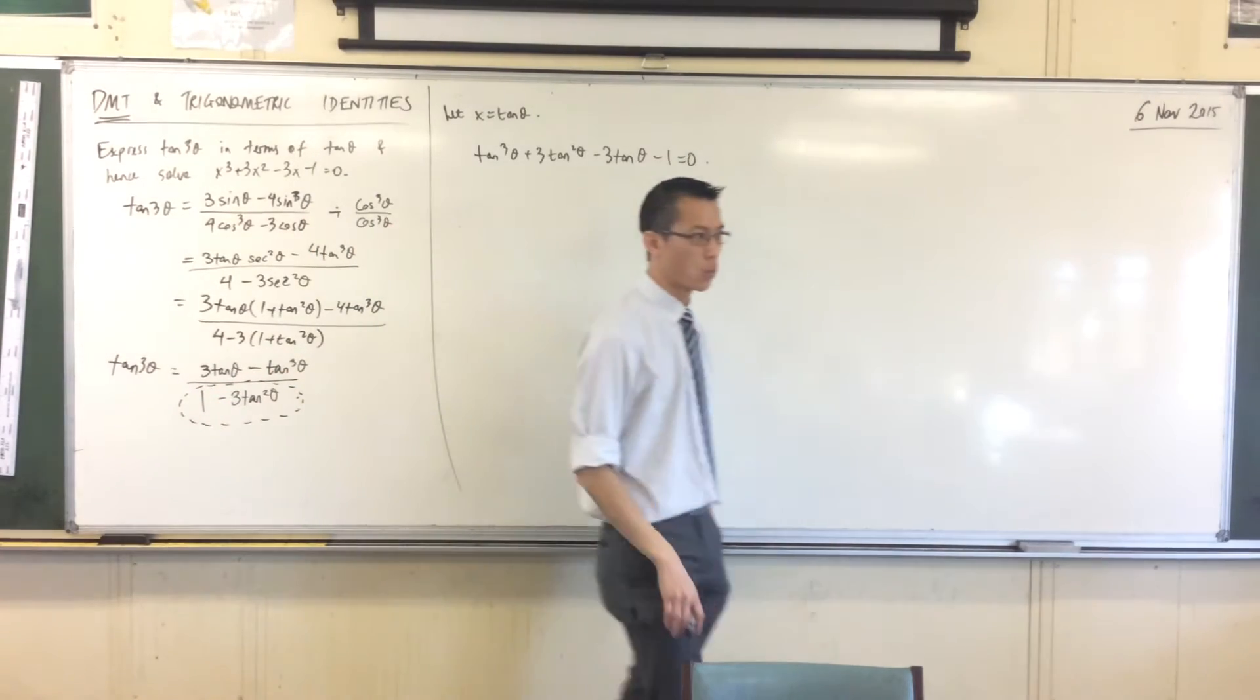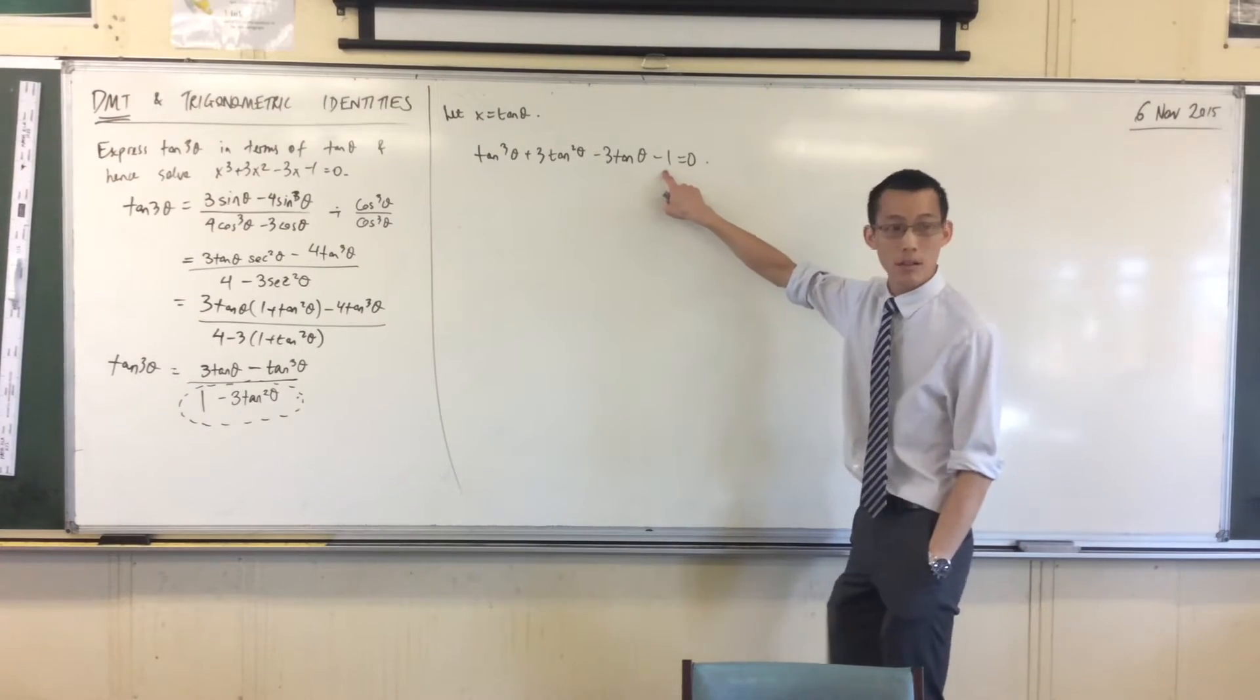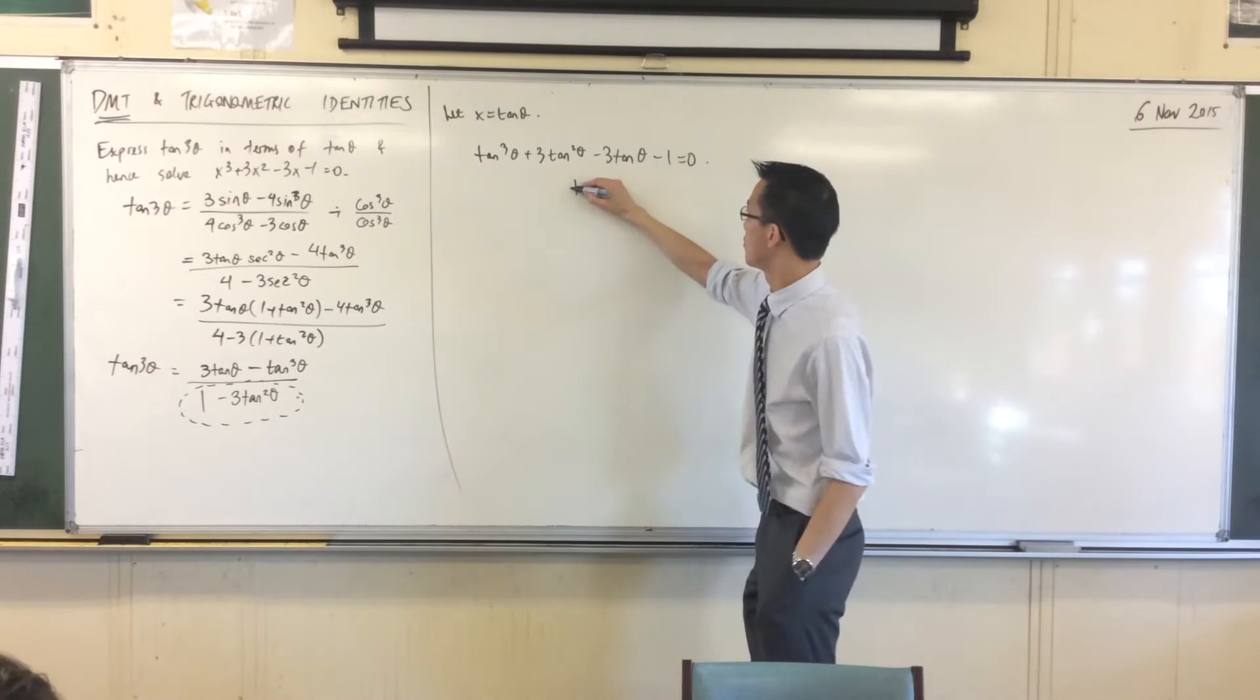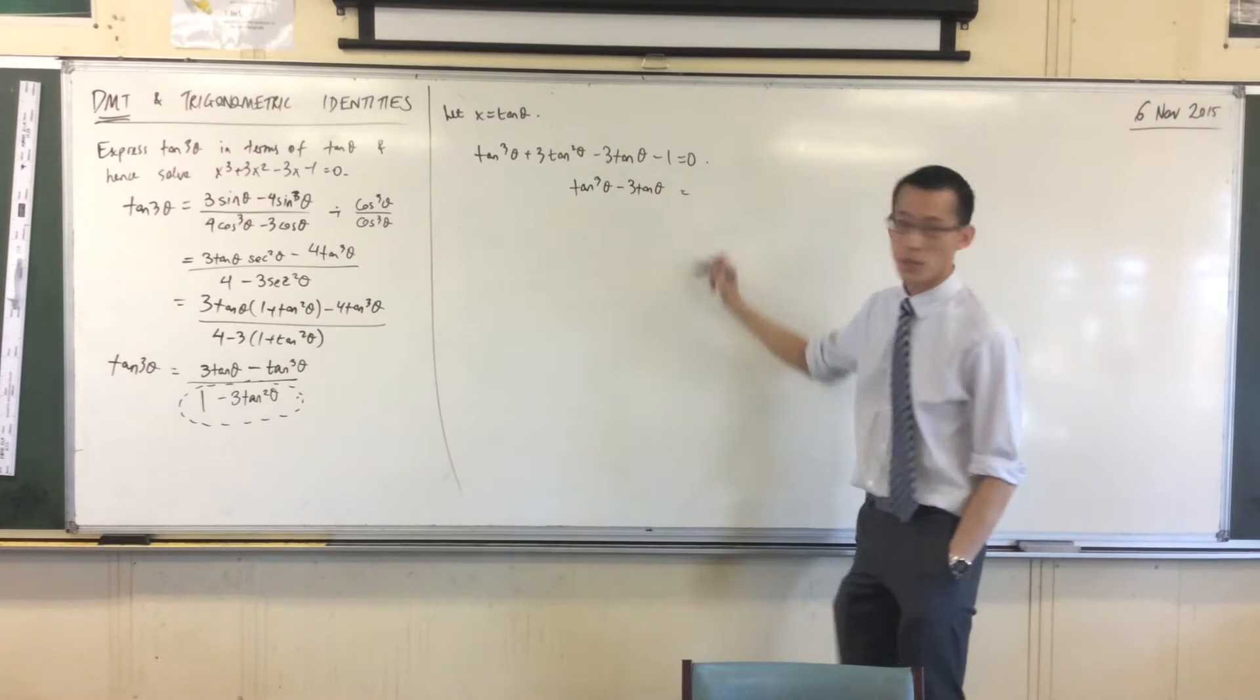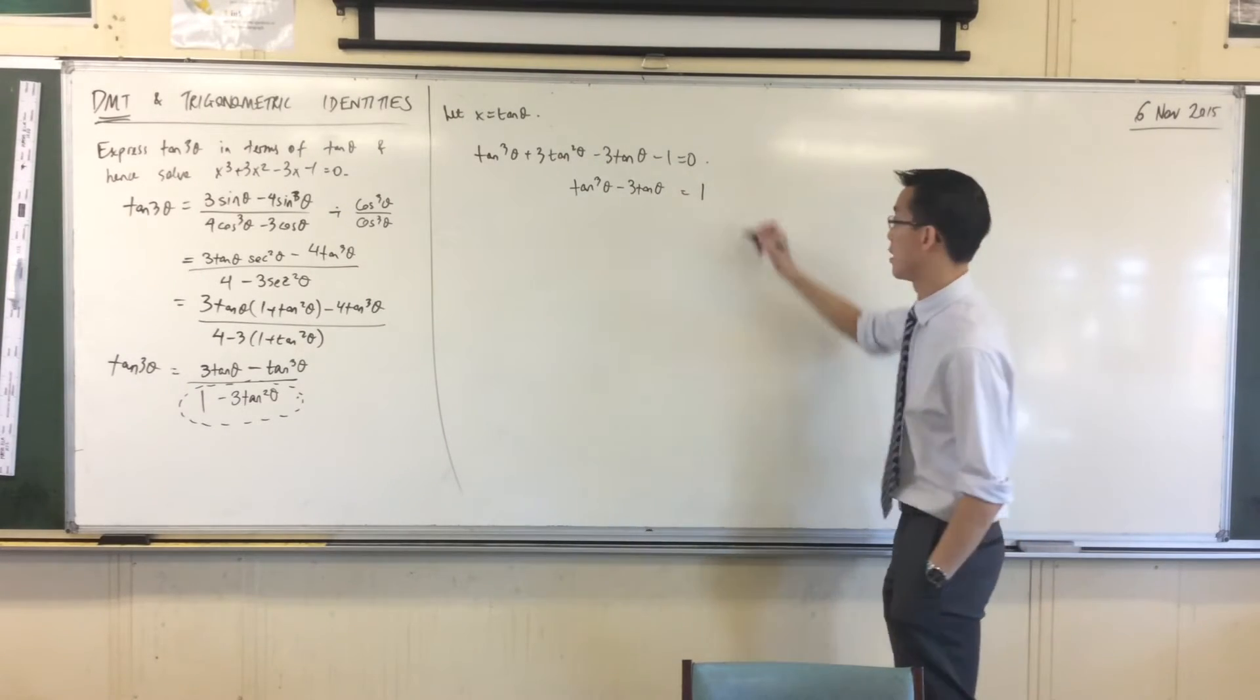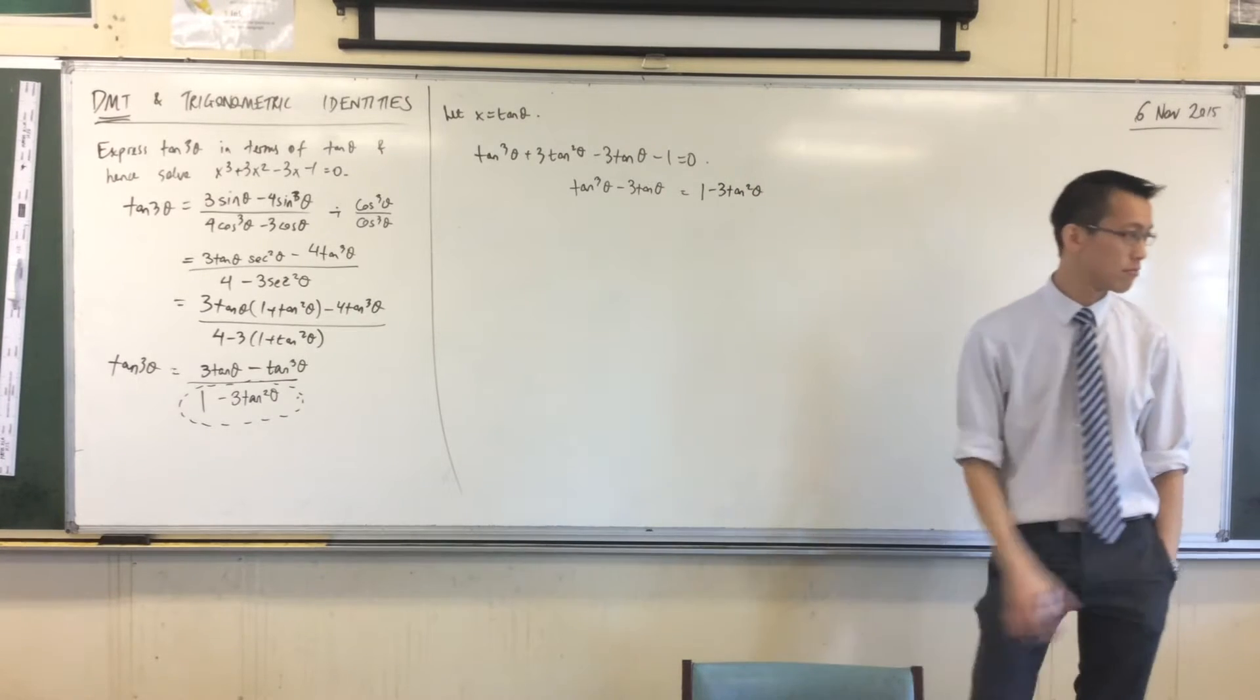You see that? Where is that in here? Well, there's my one, and there's my three tan squared. So I'm going to move them on the other side. What's left here? So I'm going to add one to both sides and I'm going to subtract three tan squared theta from both sides. Are you happy there?